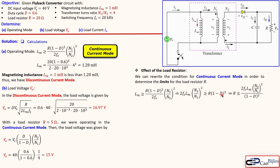Isolating R, the expression becomes: R_max = 2·Lm·Fs · (N1/N2)² / (1-D)². Substituting Fs = 20 kHz, Lm = 1 mH, N1/N2 = 4 (so N2/N1 = 1/4), and D = 0.6, we get R_max = 15.625 Ω. The 5 Ω resistor is well below this boundary (CCM), while the 20 Ω resistor exceeds it (DCM) — confirming our earlier determination.